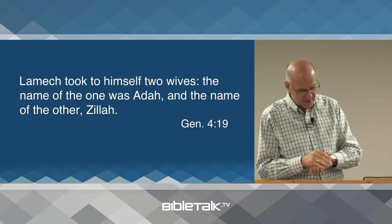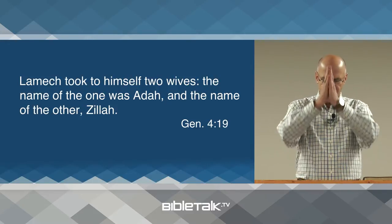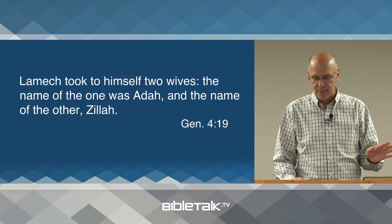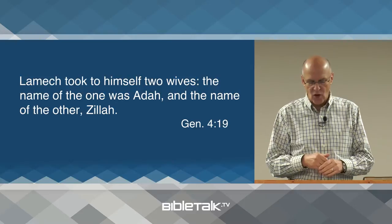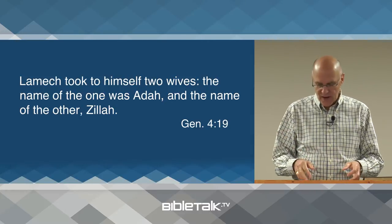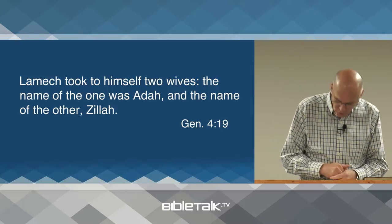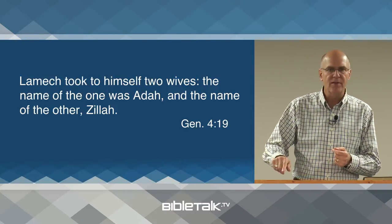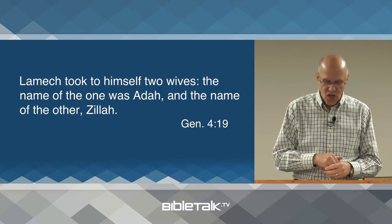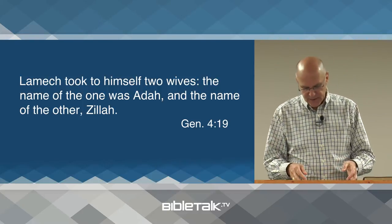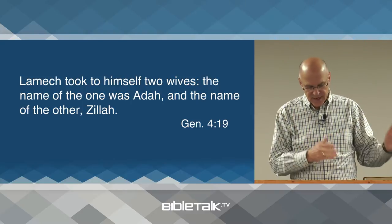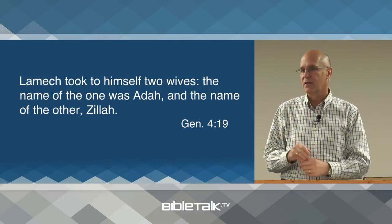Lamech is the first recorded person to begin polygamy. Up until this time there is no polygamy. Polygamy is a direct disobedience of God's law regarding marriage. The names of his wives — Adah and Zillah — mean ornament and shadow, suggesting their beauty and his attraction. Verse 19: Lamech took to himself two wives. The reason may not have been sexual lust but rather the desire to have a larger family faster, guaranteeing safety, prosperity in numbers, and strength in the community.